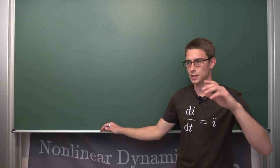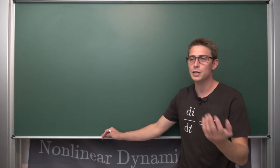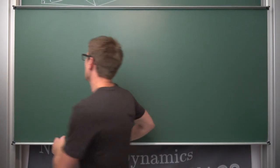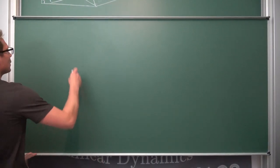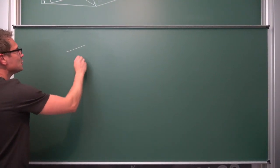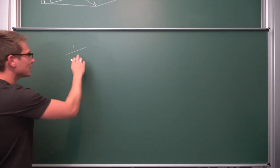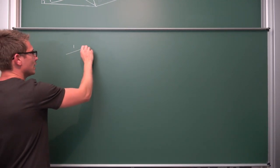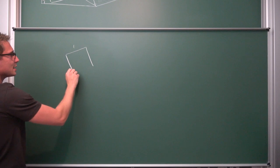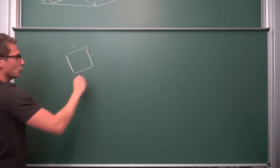What we are going to do first is construct ourselves a unit side length. Unit means, for example, one centimeter — we are going to just call it a unit. Now this right here is a unit side length; let's say it has a side length of one. We are going to complete this to a square, putting in 90-degree angles with the same side lengths — they all have a side length of one.